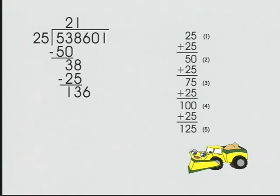Looking at our chart, we see that we can subtract 125 from 136. 125 is five 25s. Subtract, bring down our 0.